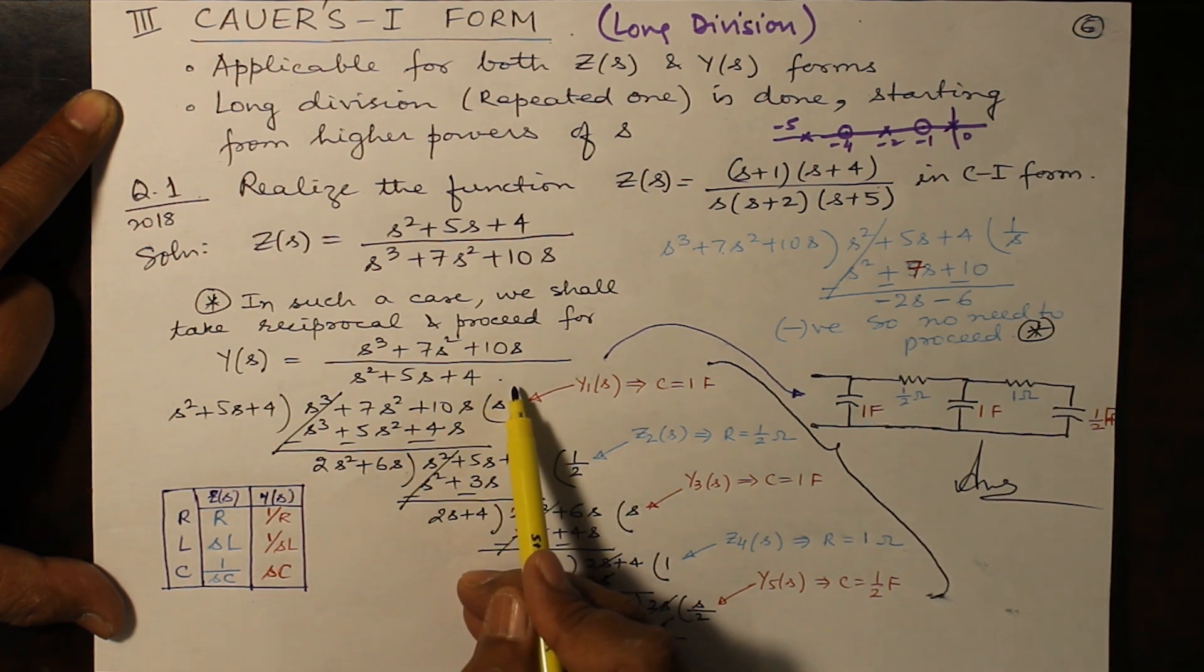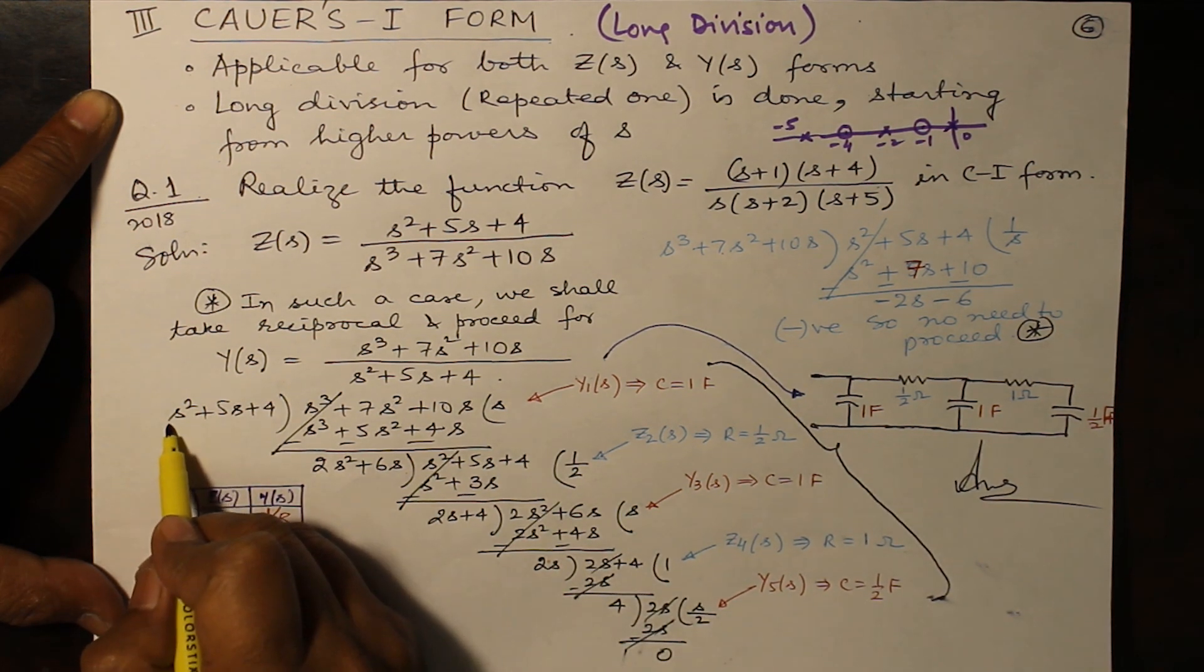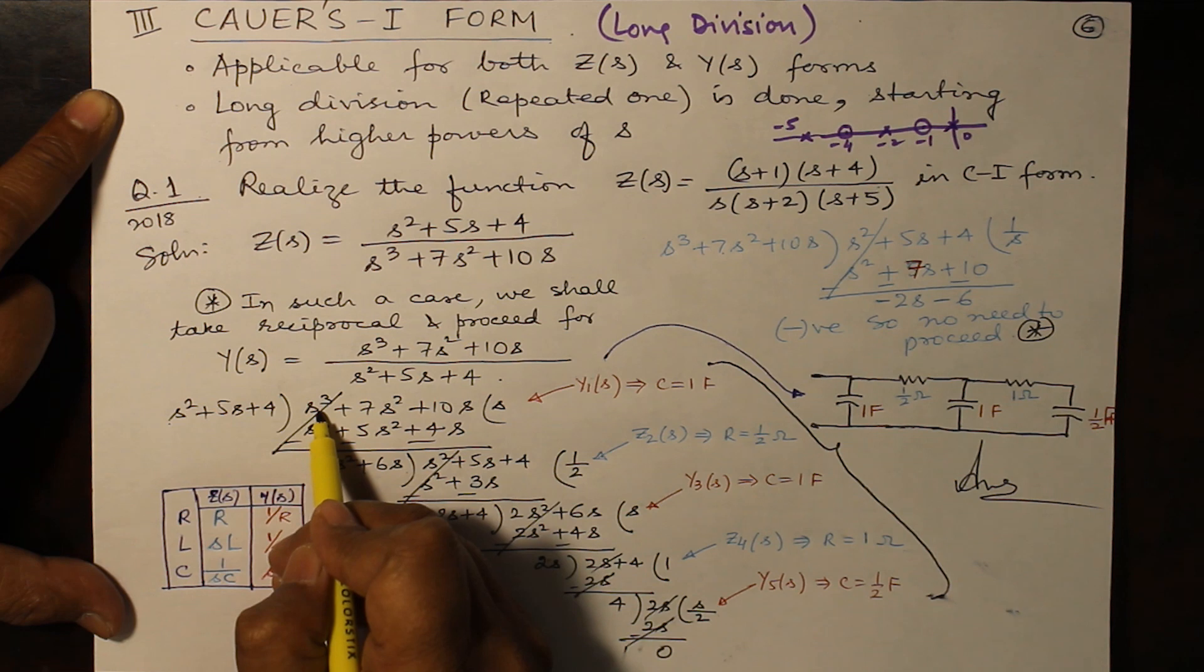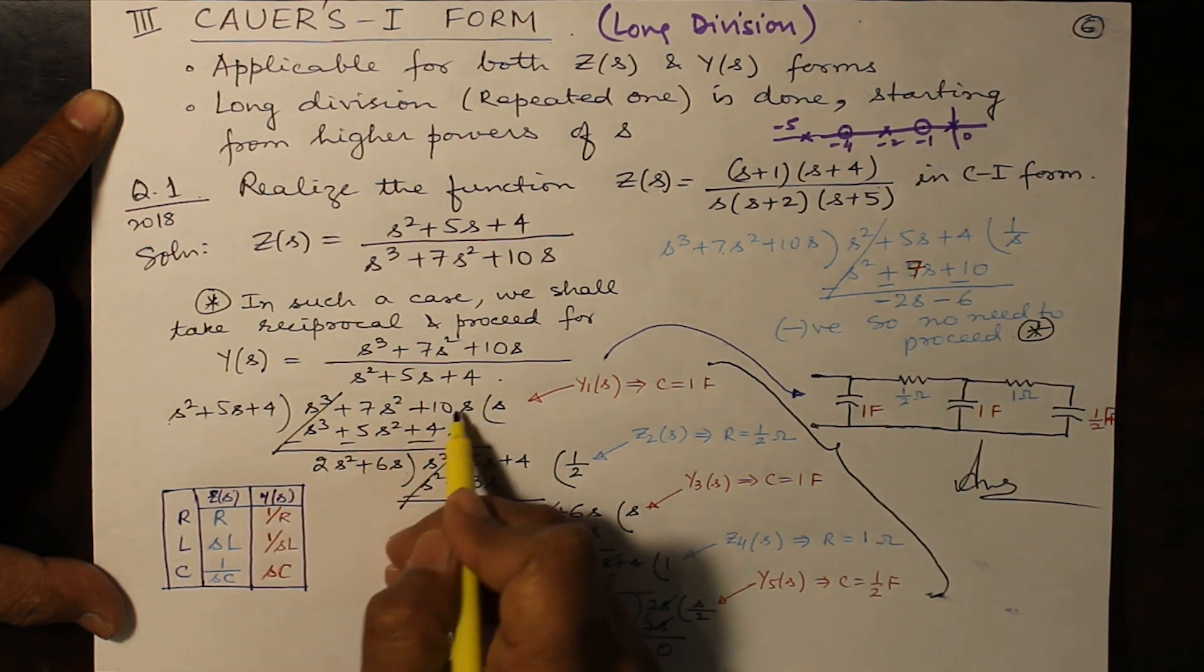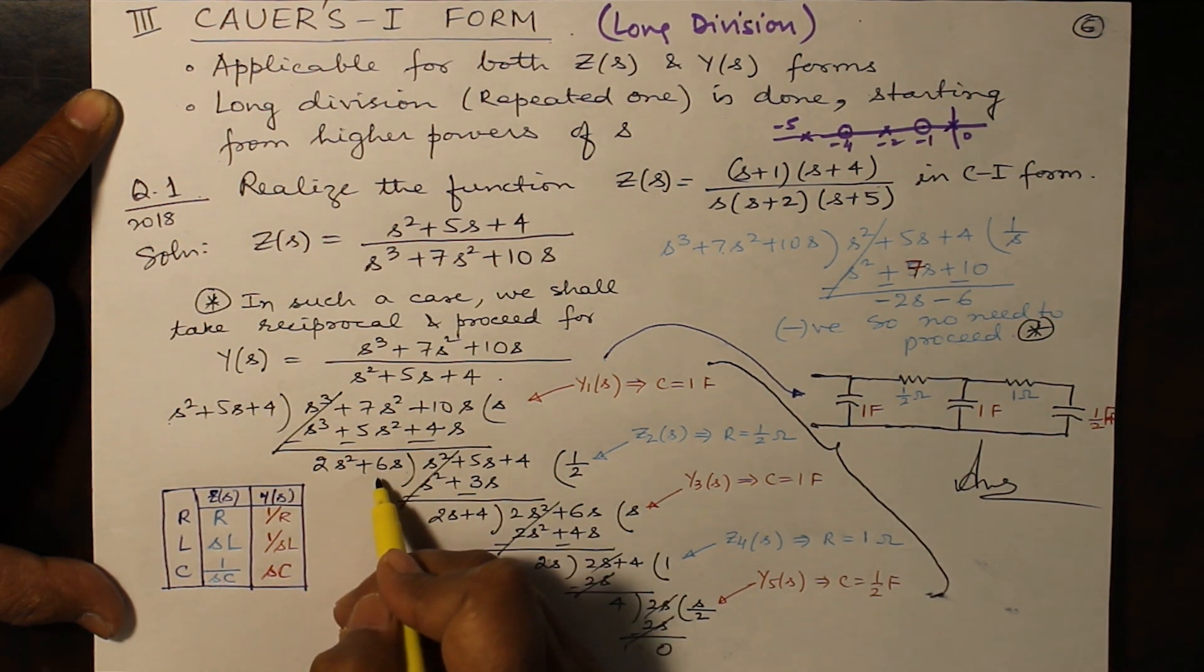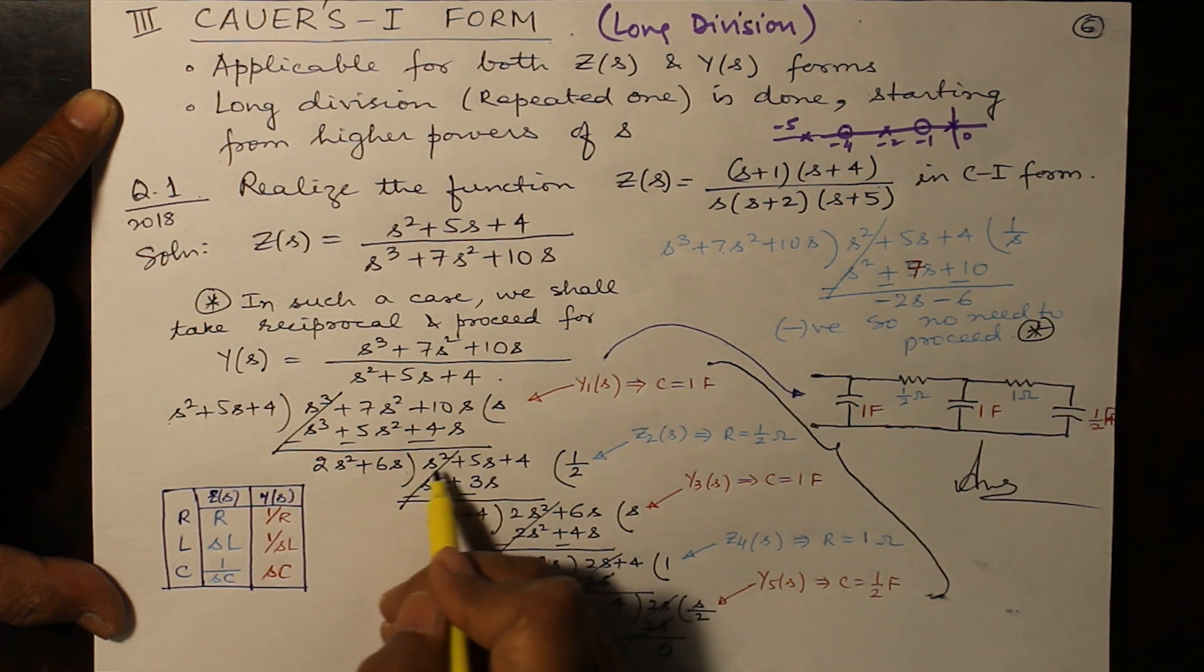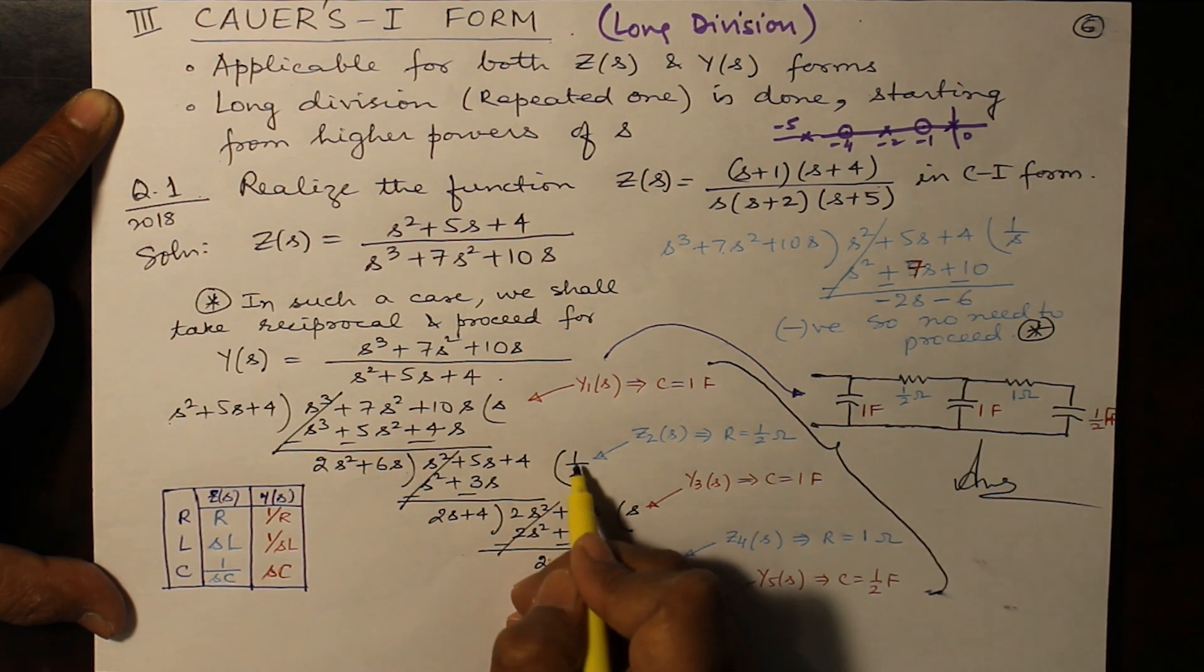Now this is long division. You proceed s² + 5s + 4. This is coming here. What is to be multiplied to s² so that it becomes s³? It is s. So s³ will get cancelled and on solving this will give you 2s² + 6s. Now this remainder will become the divisor and s² + 5s + 4, the earlier divisor will now become the dividend.